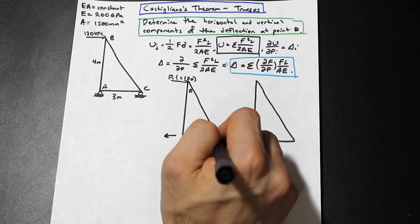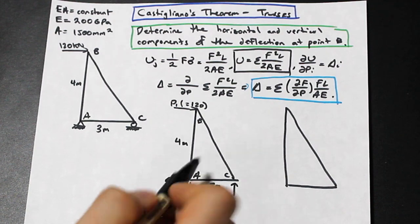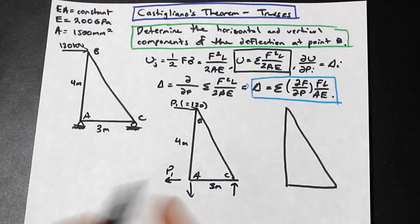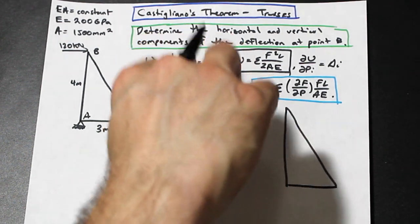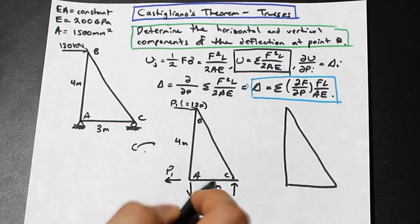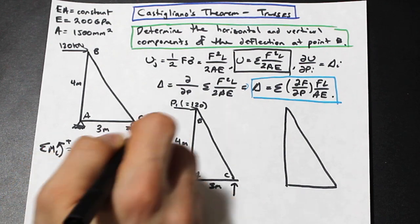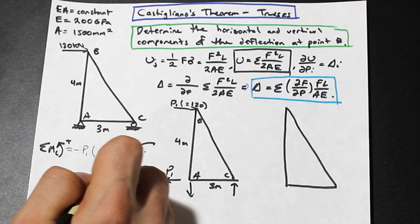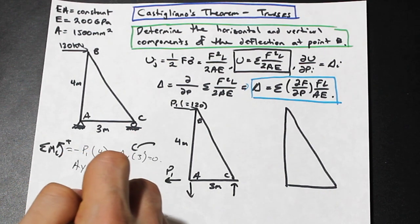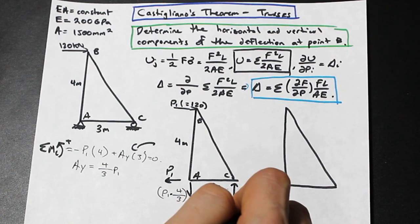We have reactions at A and C. The truss is four meters by three meters. Since the only other force in the x-direction is P, the reaction at A in x is also P. Taking the moment at C: P1 times four plus AY times three equals zero, giving AY = 4/3 · P1. Since there's no other force in the Y direction, CY is also 4/3 · P1 but in the opposite direction.